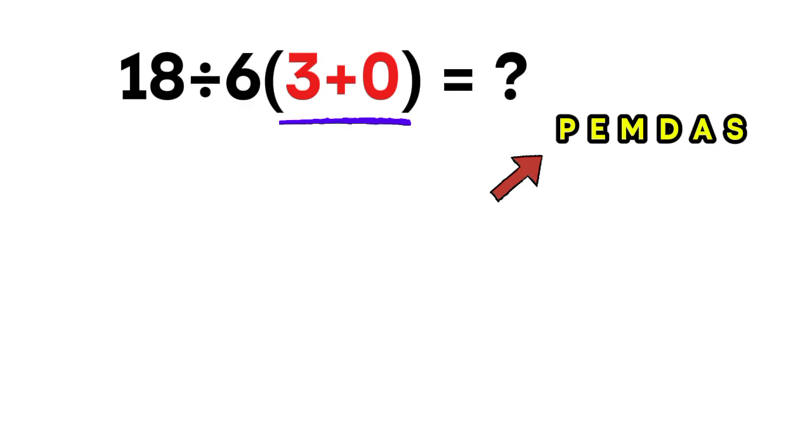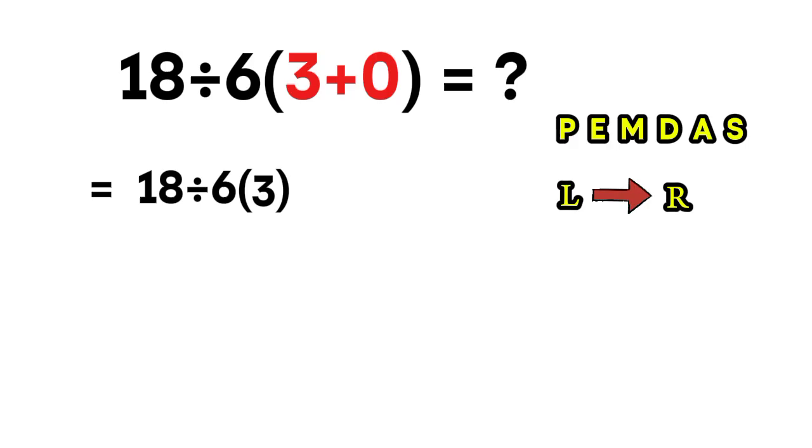Inside the parentheses, 3 plus 0 gives 3. Now the expression becomes 18 divided by 6 times 3. We have one division and one multiplication. Since they share equal priority, we process them from left to right.